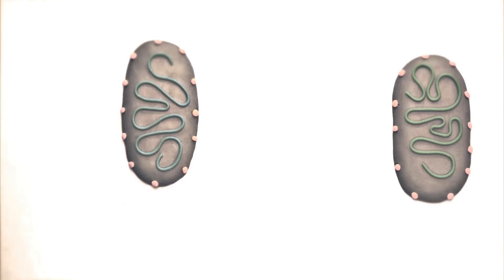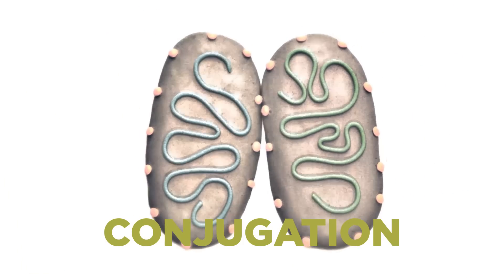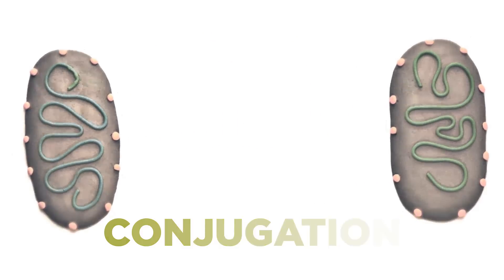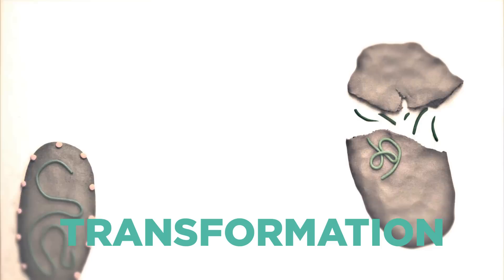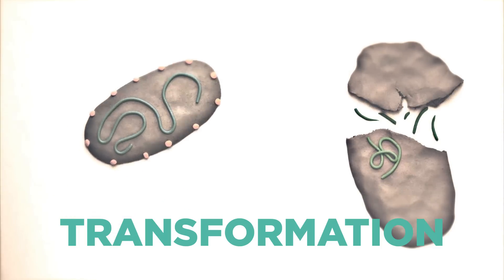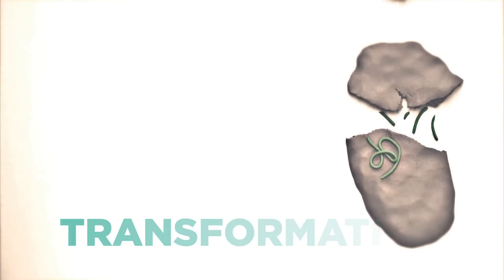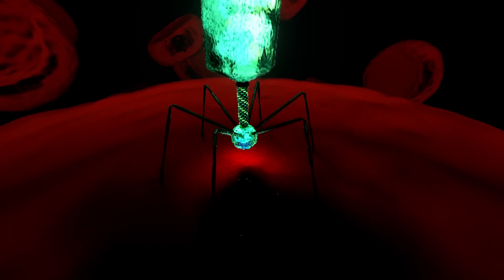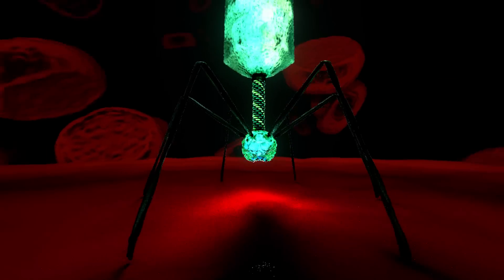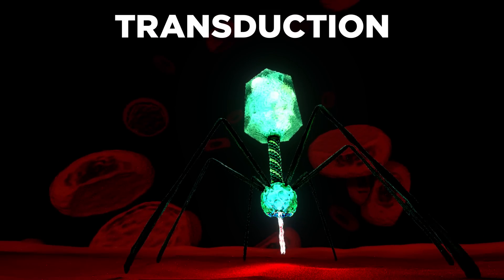Lateral gene transfer happens in a few ways. Conjugation occurs when a living cell transfers DNA to another living cell. Transformation is when a living cell takes in DNA from a dead cell by using proteins on its outer membrane. Viruses also play a major role in lateral gene transfer as they can accidentally package DNA from a host and carry it to another cell in a process known as transduction.